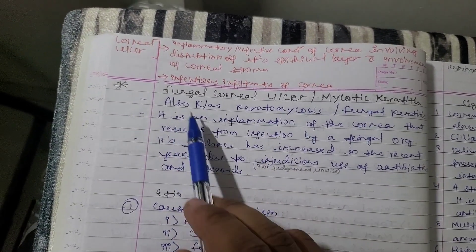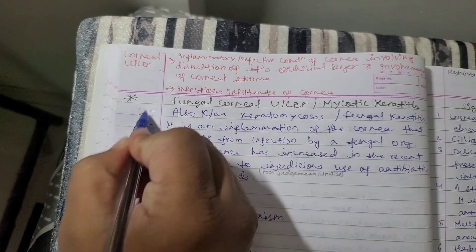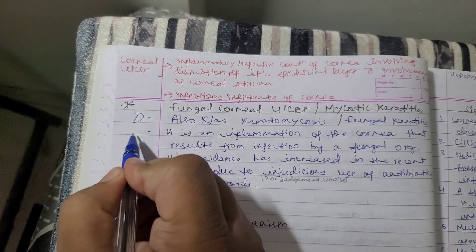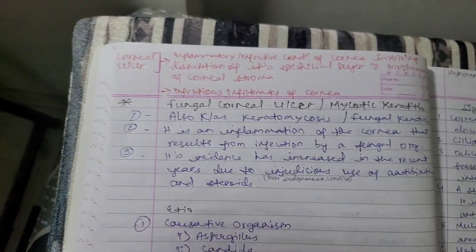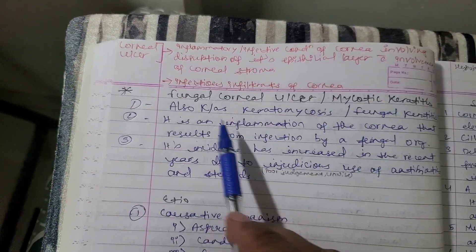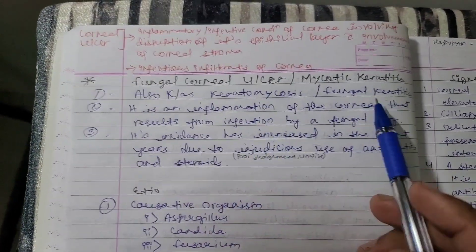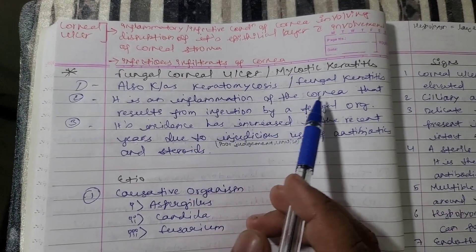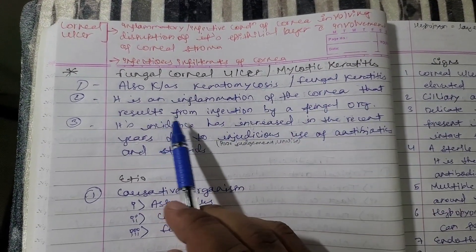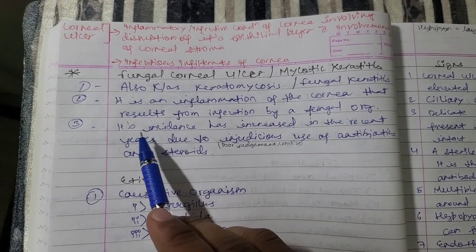Now we will give an introduction to this, covering three points in a point-wise manner which will be easy to remember for the exam. First: fungal corneal ulcer is also known as keratomycosis and fungal keratitis. It is an inflammation of the cornea that results from infection by a fungal organism.